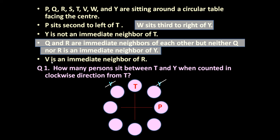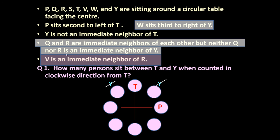Next statement: V is an immediate neighbor of R. So things are still not clear individually, but if we club these two statements — Q and R are neighbors, and V and R are neighbors — it means Q, R and V are sitting together. Either they sit in the format Q, R, V or they sit V, R, Q. One thing is clear from these two statements: these three are sitting together.